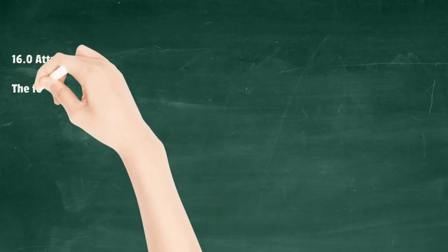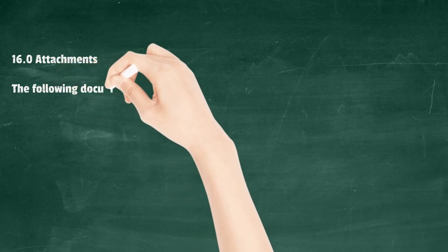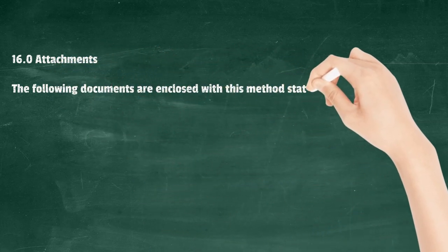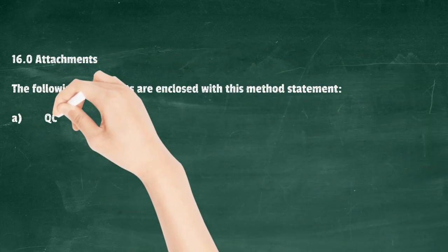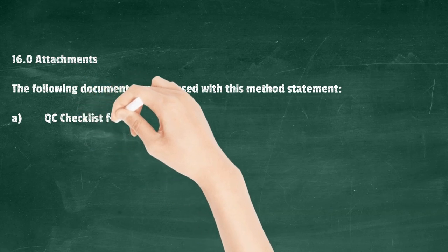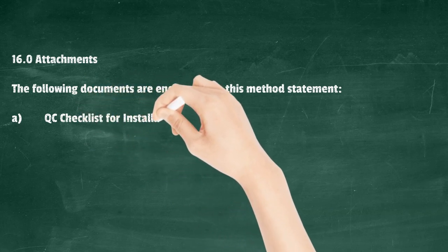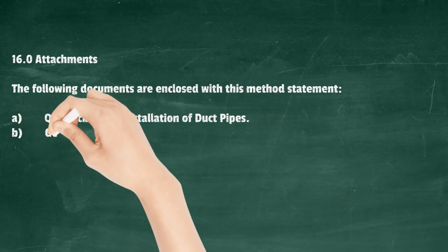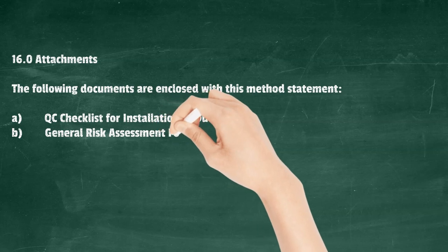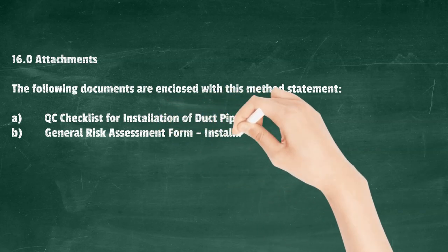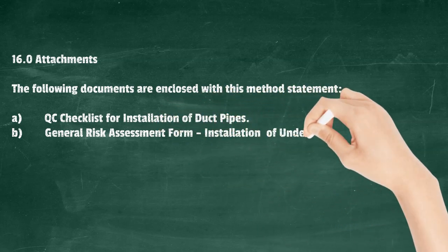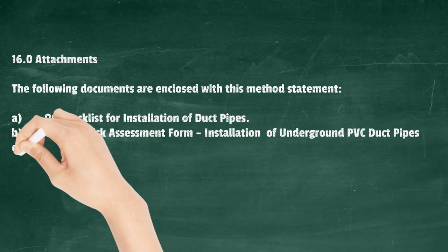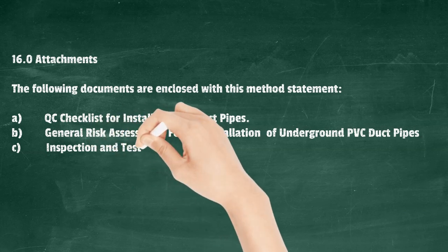Attachments: The following documents are enclosed with this method statement: A) QC checklist for installation of duct pipes; B) General risk assessment form for installation of underground PVC duct pipes; C) Inspection and test plan.